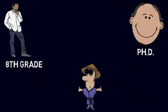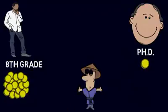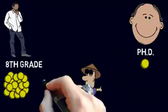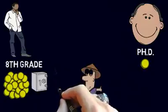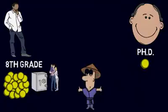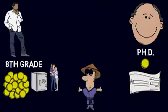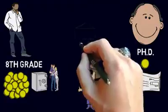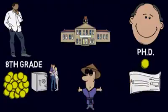Both earn substantial incomes, yet one always struggles financially, while the other is going to become one of the richest men in Hawaii. One is going to die leaving tens of millions of dollars to his family, the other is going to leave bills to be paid.